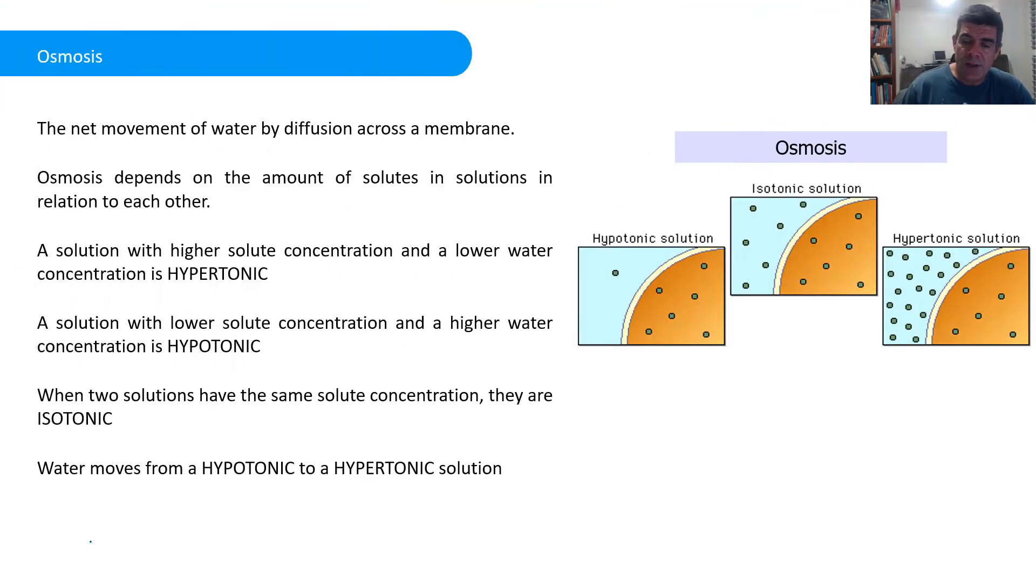So firstly, what is osmosis? Well, osmosis is the net movement of water across a membrane, so it is an example of diffusion but it's diffusion of water. And this is an interesting aspect of diffusion because what it means is that often what we find happening is the reverse of what we were looking at before.